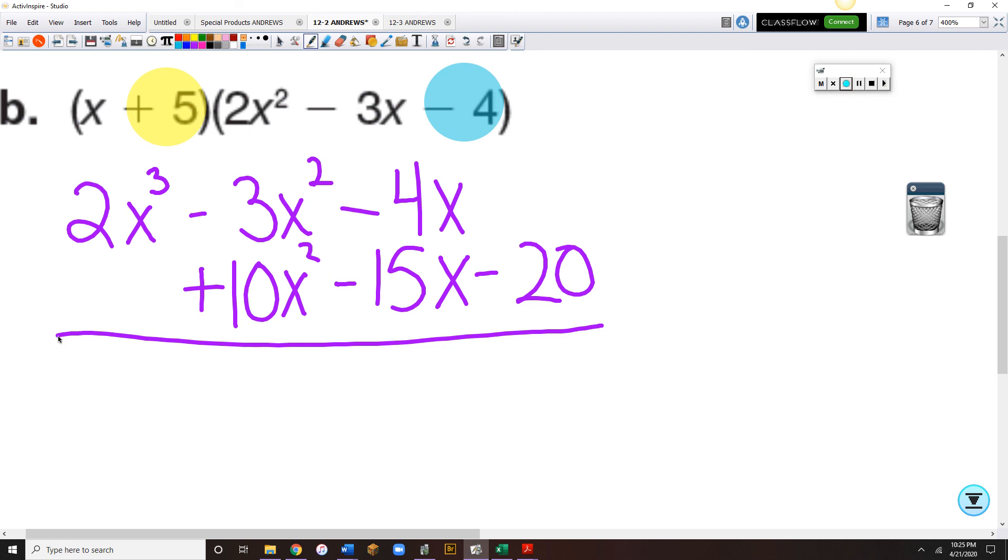Plus 5 times a minus 4 would be a minus 20. And with our like terms lined up, it's easy to simplify. 2x cubed plus 7x squared minus 19x minus 20.